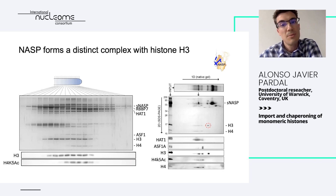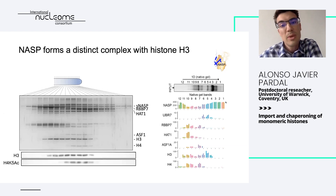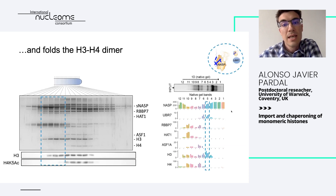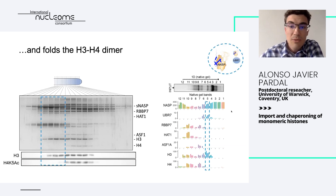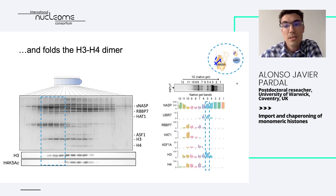This was confirmed by Western blot. We are quite certain about the existence of this monomeric histone H3 bound to NASP. We further excised those bands and sent them for mass spectrometry, which very nicely confirmed those results. Interestingly, we saw that in a proportion we estimate around one-tenth of the complex, we also see another partner binding — a protein known as UBR7.